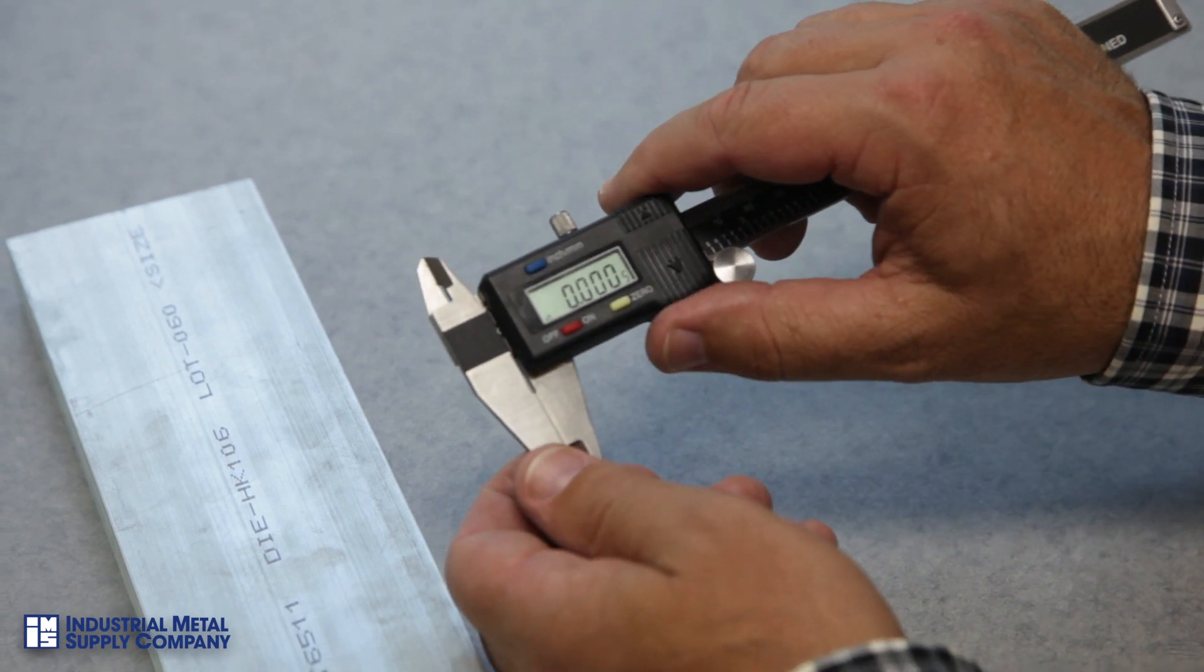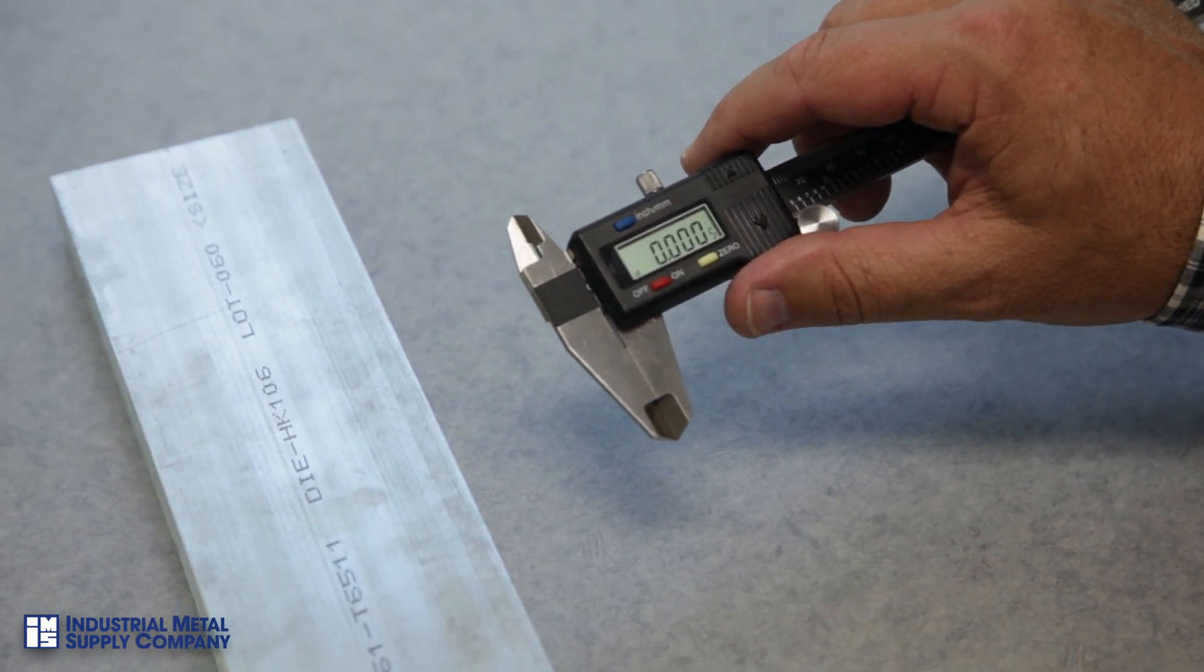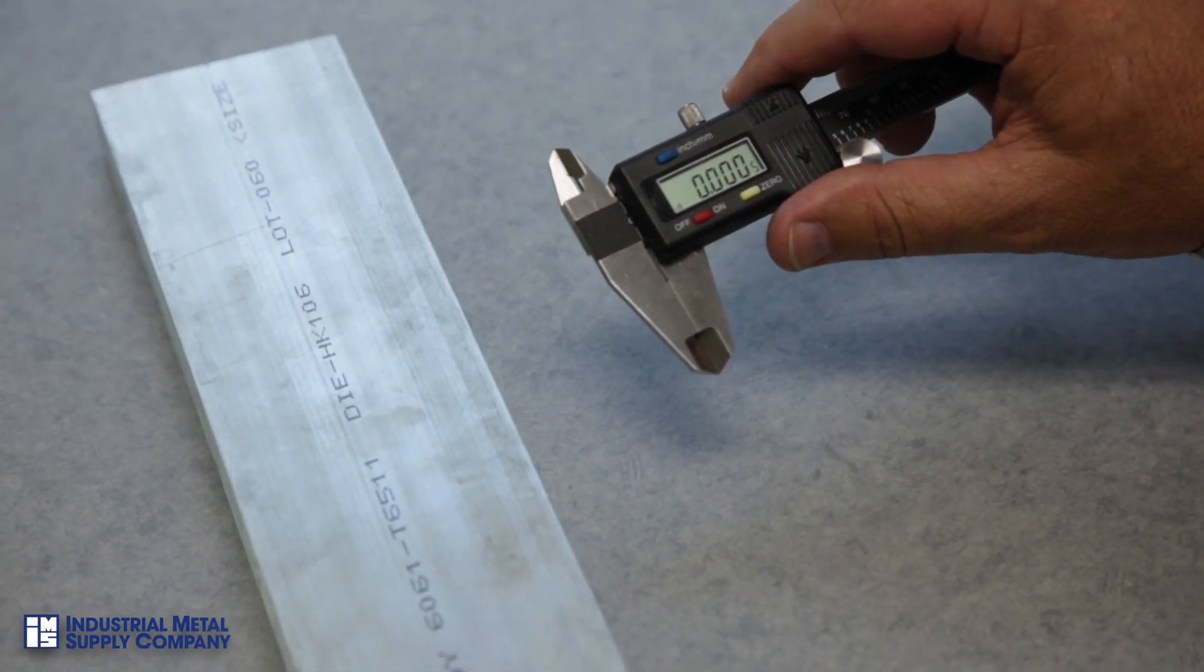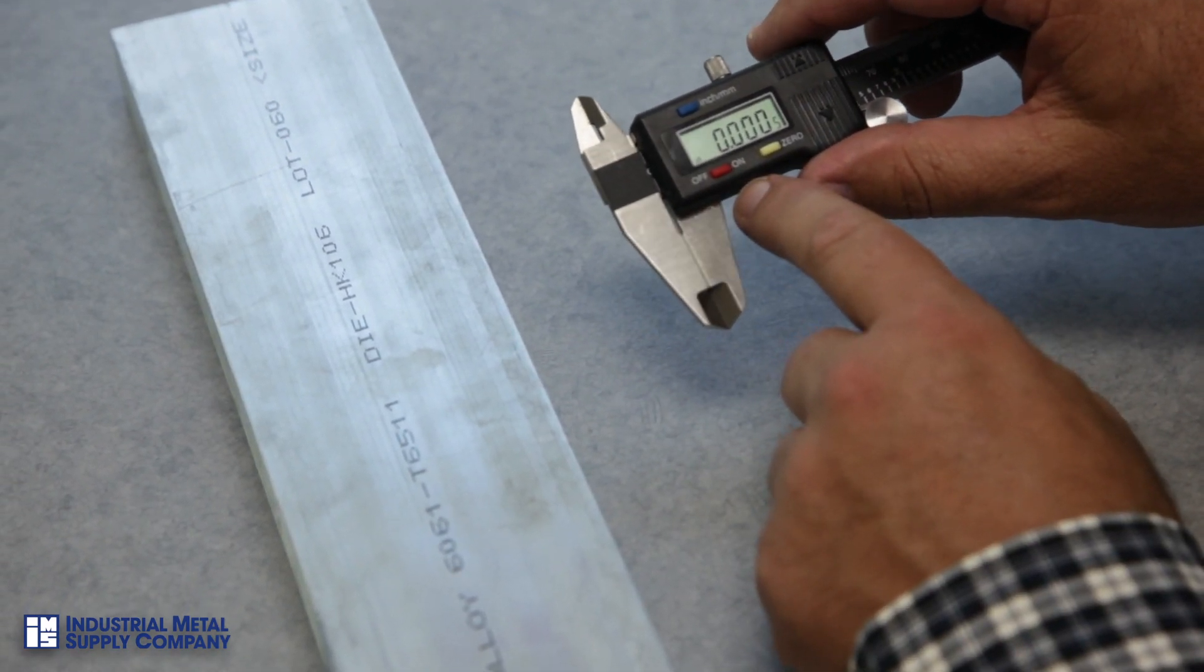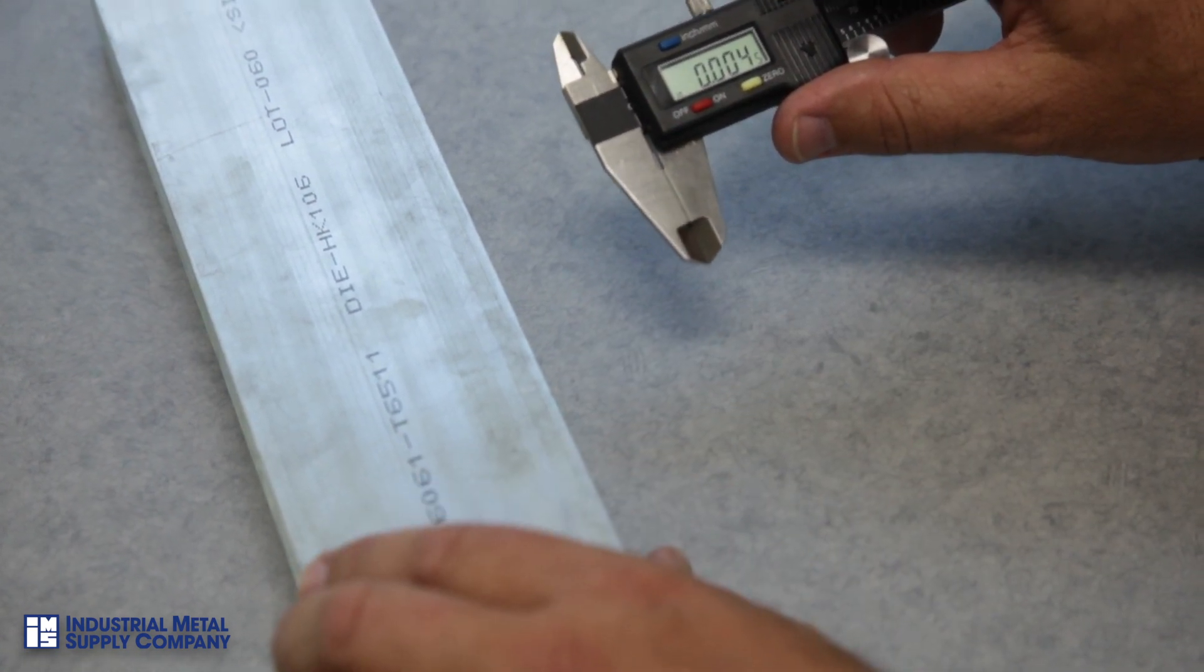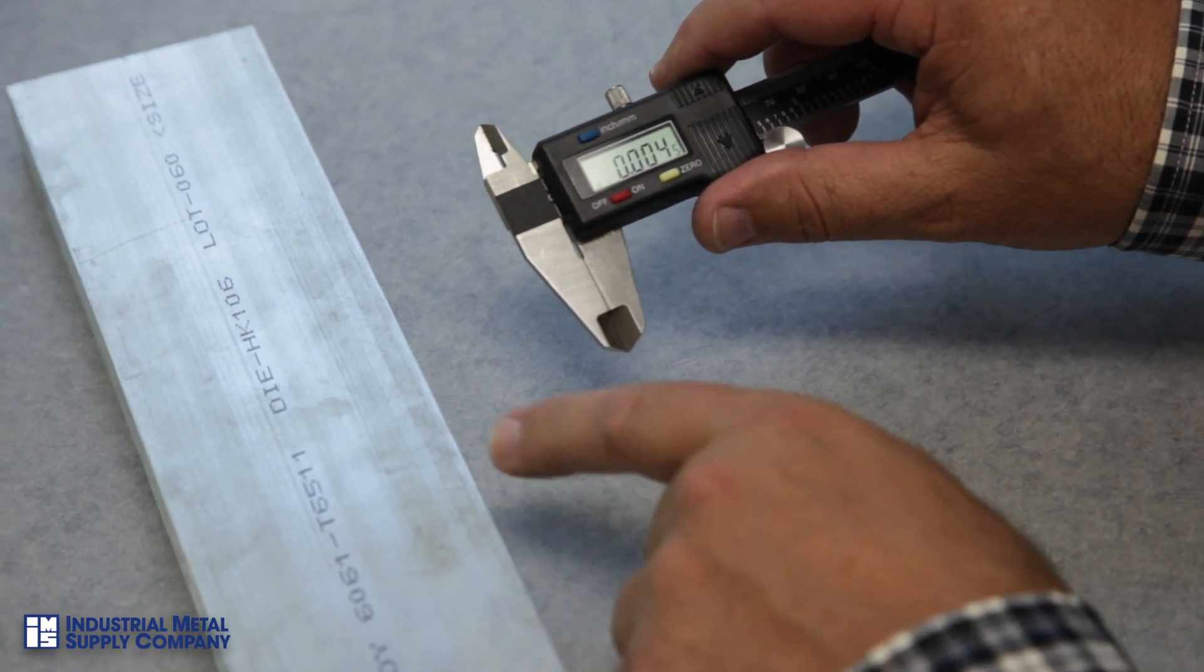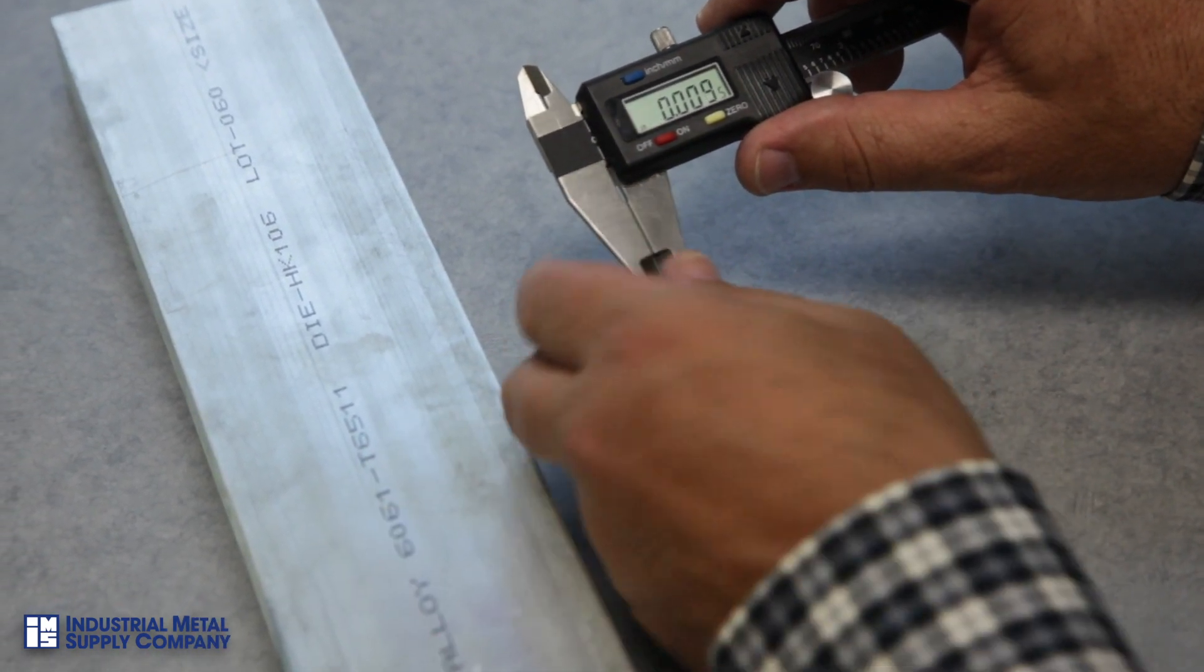Now we're going to show the proper use of a digital caliper in measuring a rectangular piece of bar that has dimensions of one inch by three inch. The reason for using the dial calipers is for ease and speed, because you have two dimensions that we're measuring. It would be inappropriate to use a zero to one mic or a one to two mic because the dimensions don't line up with the equipment.